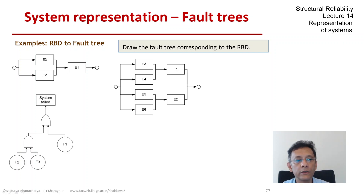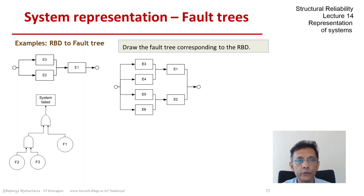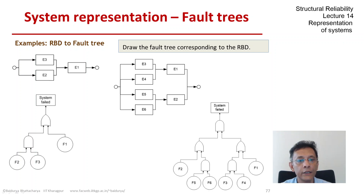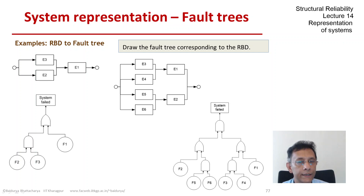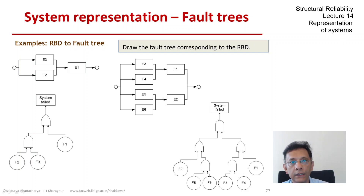We will proceed the same way as we did for the example on the left, for which we have already made the fault tree. In the lower right you see F1, F3, and F4 creating a very similar structure as in the first example. On the right part, F1 goes through an OR gate along with F3 and F4 going through an AND gate.